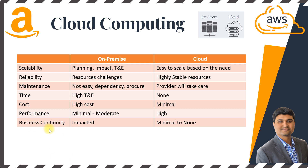The next aspect is business continuity. On-premise it's always impacted because whenever you do an upgrade or maintenance, there will be downtime. If you want to minimize the impact, you'll end up spending more time and energy. Whereas on cloud, business continuity impact is minimal to none, because there's a lot of load balancing and node-based availability, so any maintenance or downtime is managed based on availability. It's very minimal in the case of cloud.